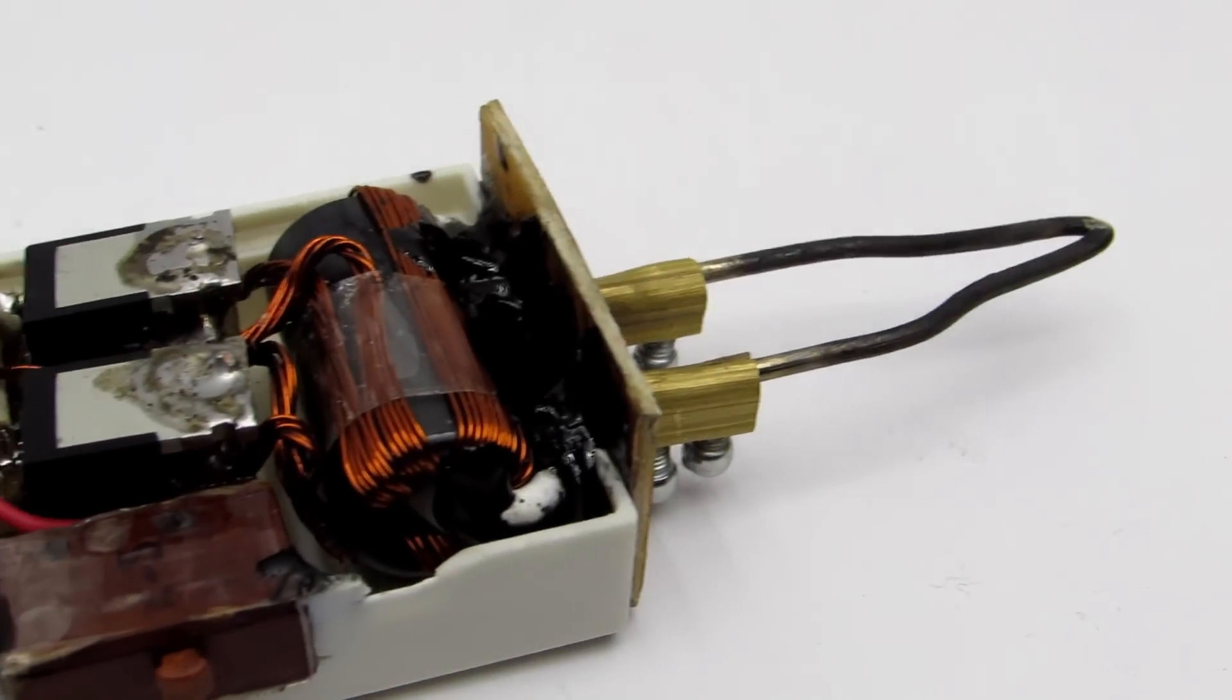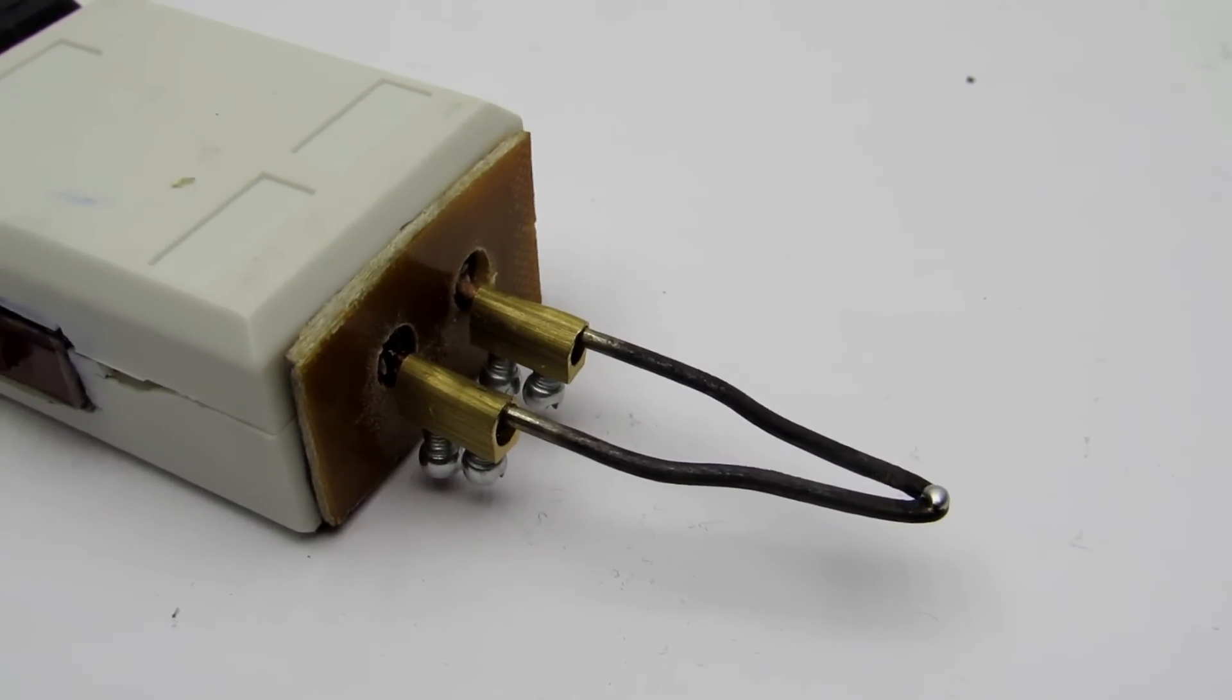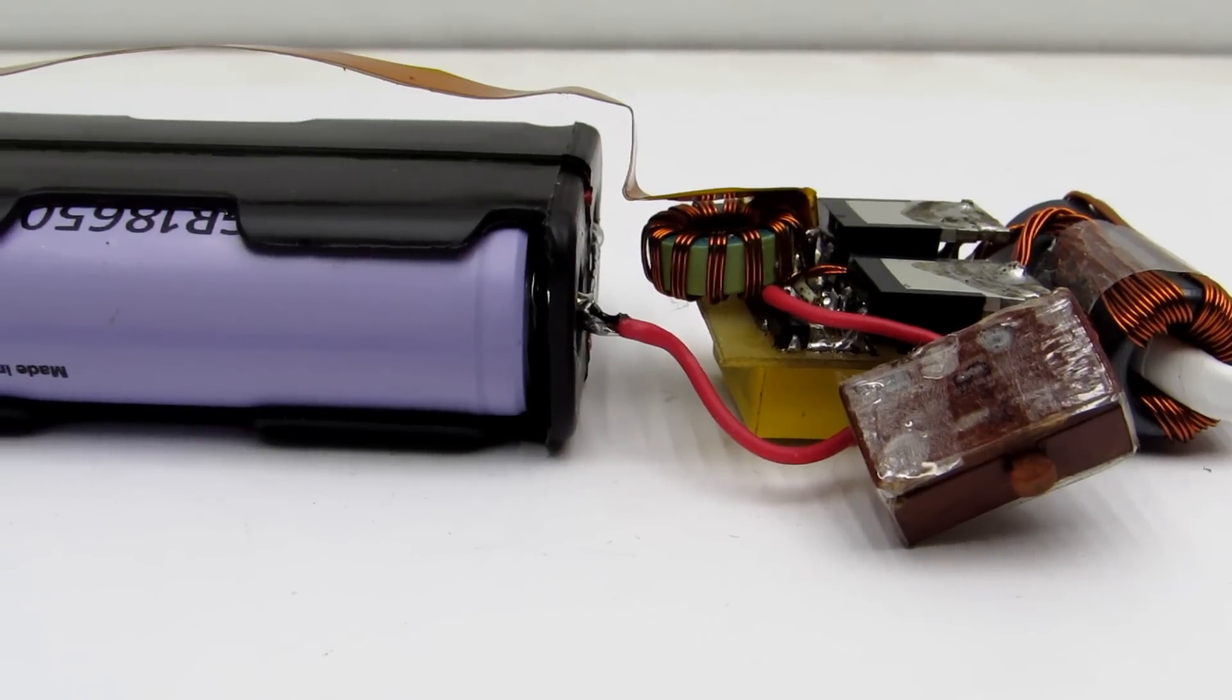It is important to remember that as the soldering iron heats up quickly, it shouldn't be left turned on. Just press the button to do your job and turn off. Therefore, the batteries will be under load not all the time, but only during the soldering.